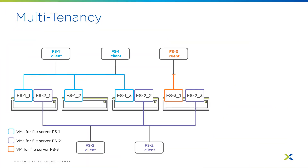You can also deploy multiple file servers on the same physical cluster. Each file server instance can have a unique configuration including different compute resources and a differing number of file server VMs. You can also deploy single FSVM instances within larger clusters, really just to match your needs.